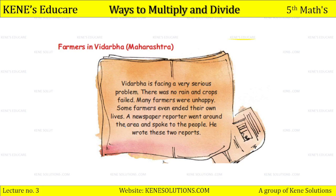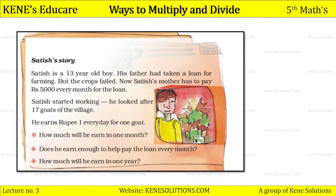A newspaper reporter went there and spoke to the people of that place. He wrote some reports. Let's look at the first one — Satish's story. Satish is a 13-year-old boy. His father had taken a loan for farming.